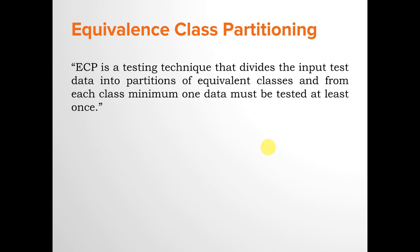So what is equivalence class partitioning? Equivalence class partitioning is a testing technique that divides the input test data into partitions of equivalence classes, and from each class a minimum of one data point must be tested at least once. All valid domain data for the age field will be divided into different classes, and we will pick at least one data point from each class to ensure maximum test coverage on the given requirement.